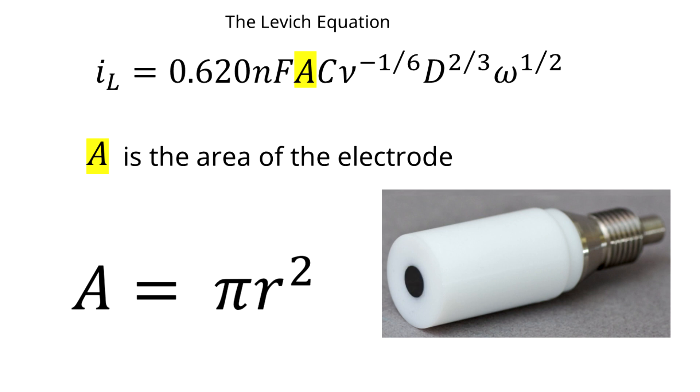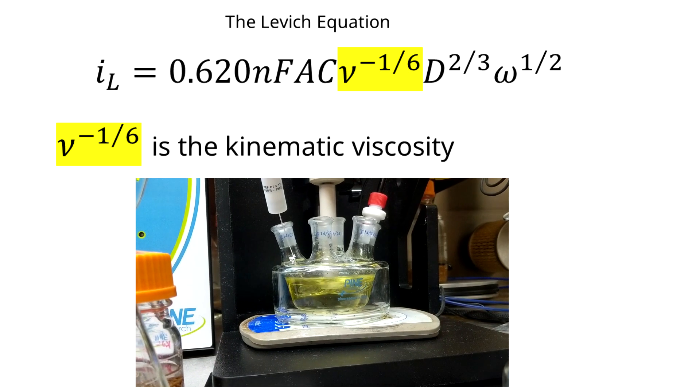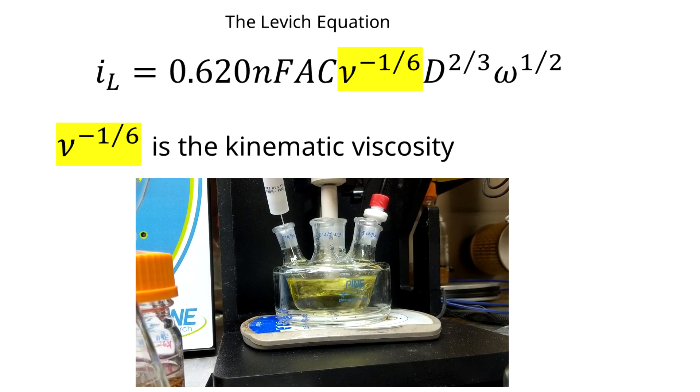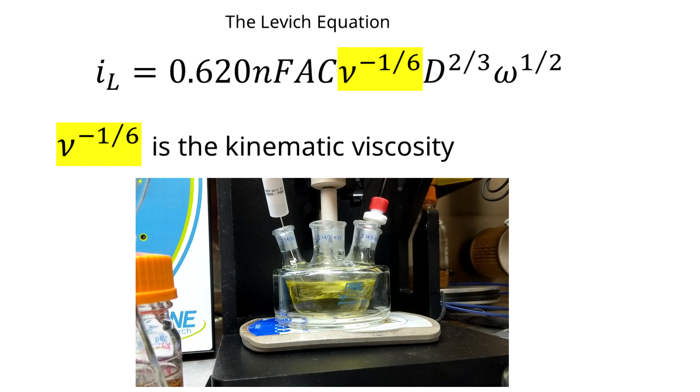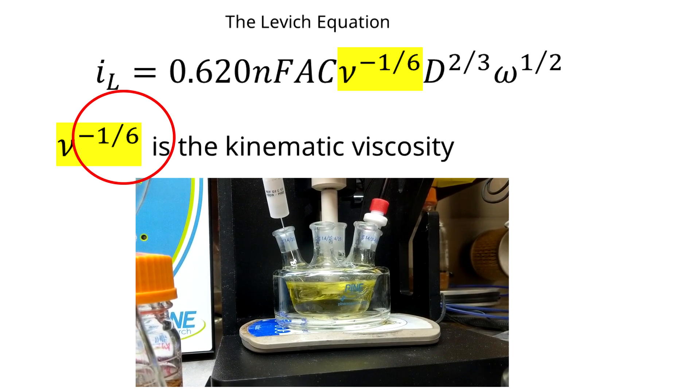This can be calculated geometrically for a polished electrode, but if you can determine the electrochemically active surface area, your results will be more accurate. C is the concentration of the bulk redox molecule. In this case, it's the concentration of ferrocene in solution. ν is the kinematic viscosity, which is the ratio of the density and the absolute viscosity of our electrolyte solution. Typically, this will be a value that you need to look up. In the Levich equation, the kinematic viscosity is raised to the minus one-sixth power.